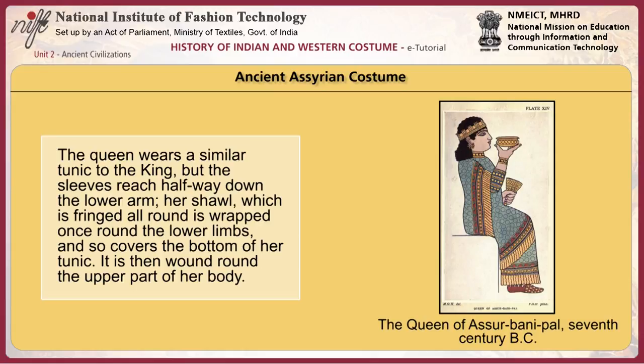In this picture, the queen wears a similar tunic to the king, but the sleeves reach halfway down the lower arm. Her shawl, which is fringed all around, is wrapped once around the lower limbs and so covers the bottom of her tunic. It is then wound round the upper part of her body.